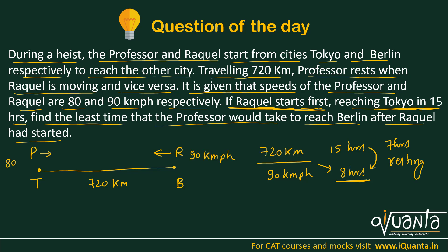So we know that Raquel is resting for 7 hours, and for that time the professor must be moving. The speed of the professor is 80 kmph. So how much will the professor move in 7 hours at 80 kmph? 80 into 7 — that means 560 kilometers will be covered by the professor when Raquel is resting.